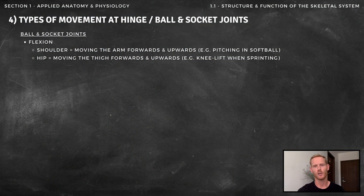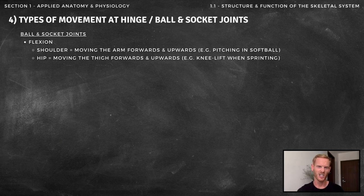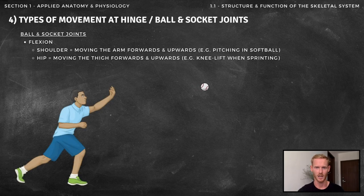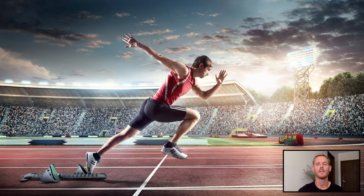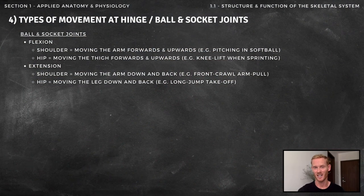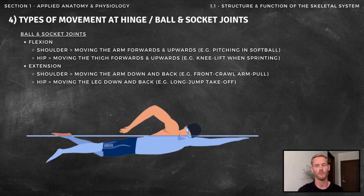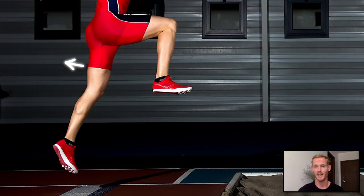Ball and socket joints are capable of flexion, extension, rotation, abduction, adduction, and circumduction. At the shoulder, flexion involves moving the arm forwards and upwards, like when pitching in softball or rounders. At the hip, it's the movement of the thigh forwards and upwards towards the chest, for example when raising the knee while sprinting. At the shoulder, extension involves moving the arm downwards and backwards, for example pulling the arm through the water when performing the front crawl. At the hip, it's the movement of the thigh downwards and backwards, for example when pushing off the board in long jump.